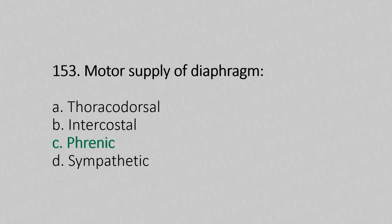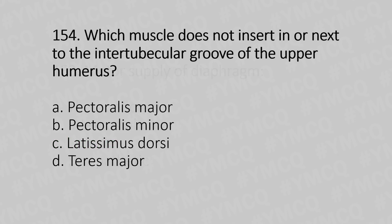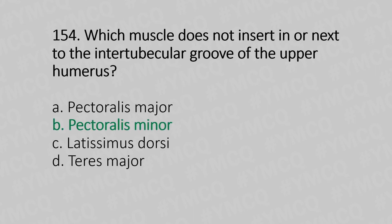Now let's move to question number 154. Which muscle does not insert in or next to the intertubercular groove of the upper humerus? Option A: pectoralis major. Option B: pectoralis minor. Option C: latissimus dorsi. Option D: teres major. And the answer is Option B: pectoralis minor.